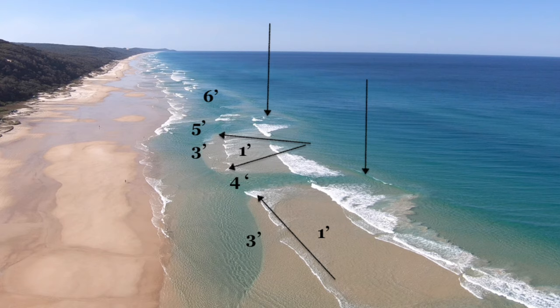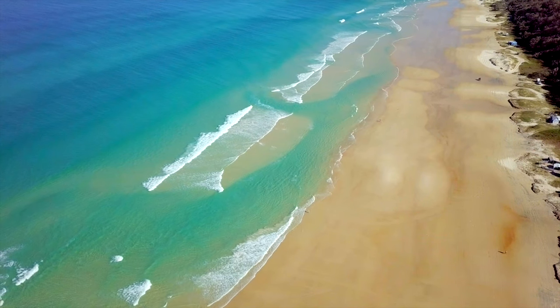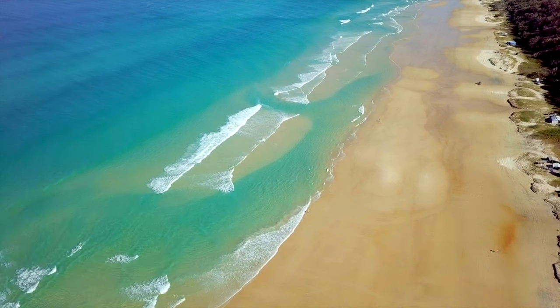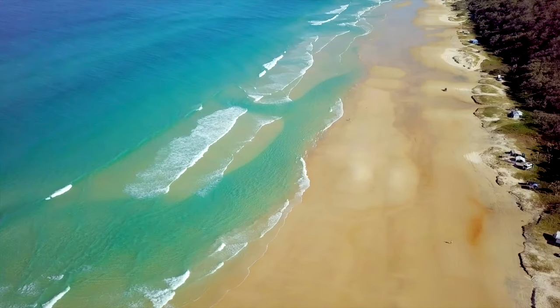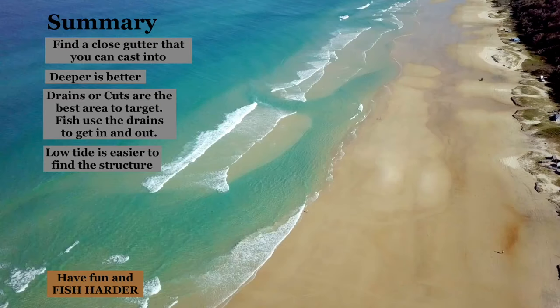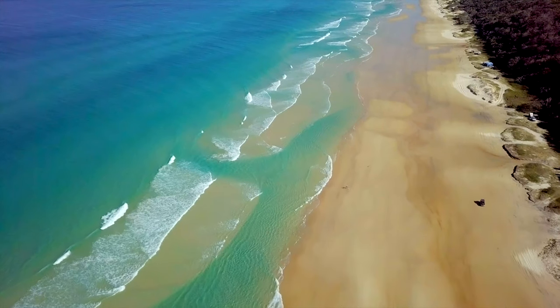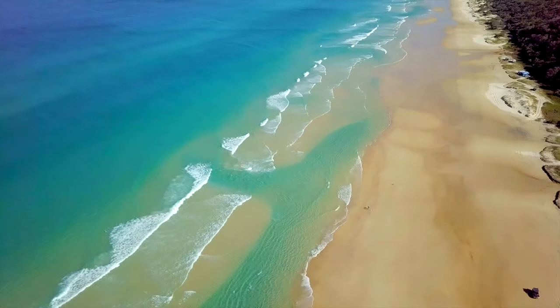The actual gutter itself ranges between three and six foot deep at low tide, depending on where you're standing. The deeper the better when it comes to fishing gutters — if you can find a nice deep gutter, your chances increase dramatically. In summary: find a close gutter you can cast to, make sure it won't be too far away at high tide, go prospecting at low tide and stick with it.